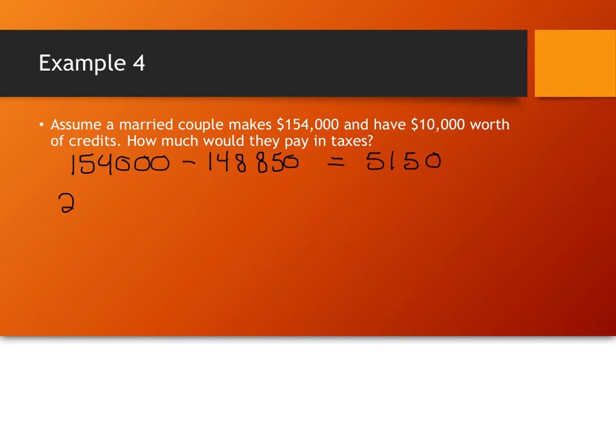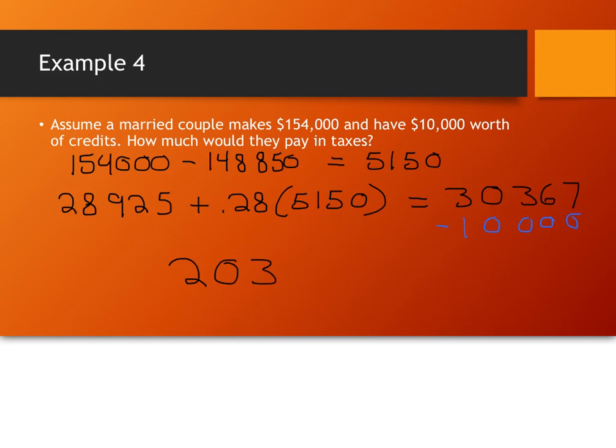So, taxes say, since I'm in that category, take $28,925, plus 28% of the excess over that $148,000. So, $28,925, plus 28% of $5,150, and we get that right now, $30,367, would be your amount of tax if we didn't have any credits. So, since we have $10,000 worth of credits, that means that your total tax burden is $20,367.